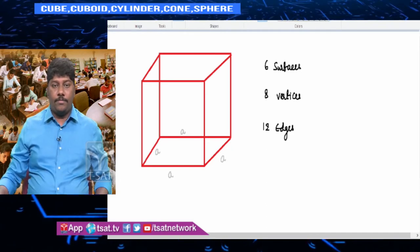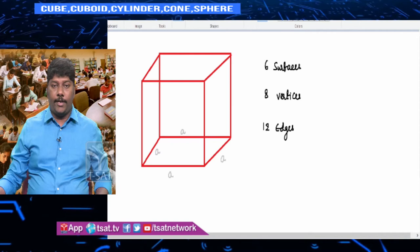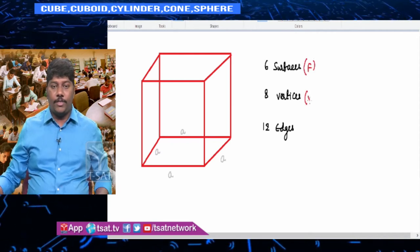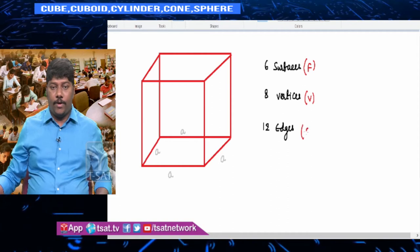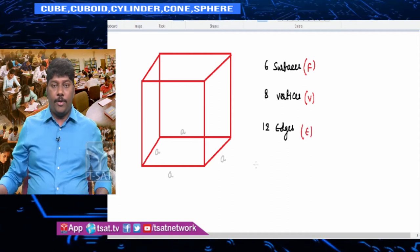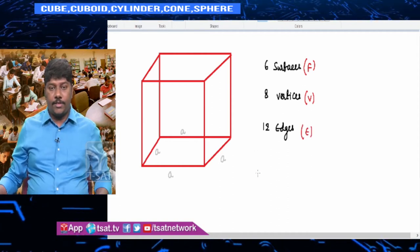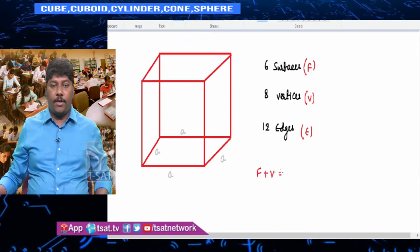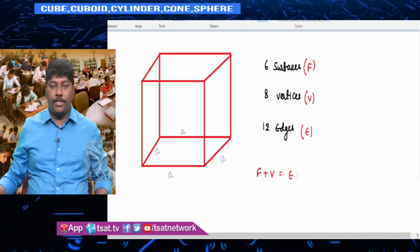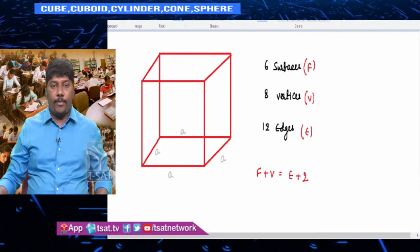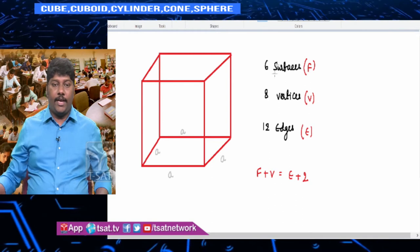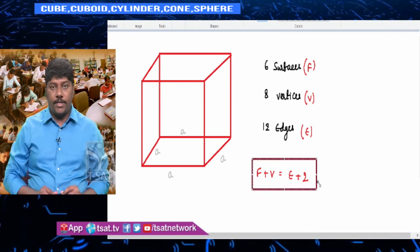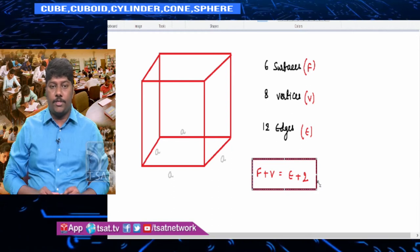For any polyhedron, remember this formula: faces plus vertices equals edges plus two. This holds good for any polyhedron you take.